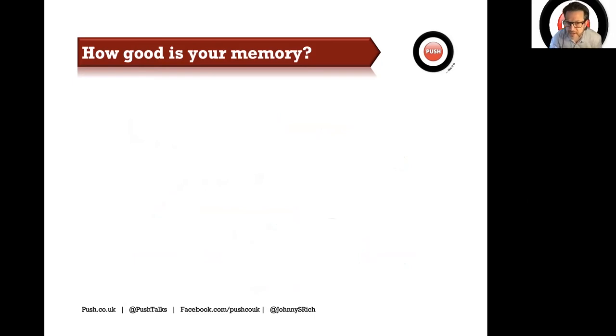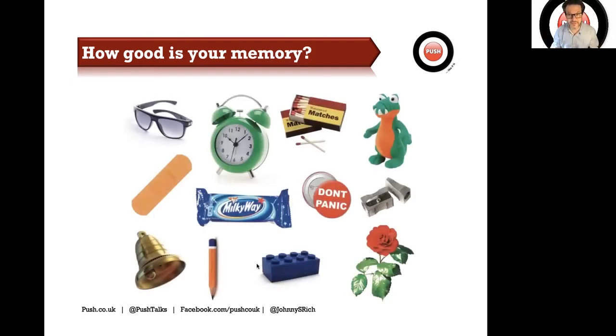Now the chances are that we can probably remember most of those items now, especially if we retell the story. So there was a girl called Rose. She was lying in bed and the alarm clock went off and she got out of bed and she trod on a Lego. She ran to the bathroom and got a plaster. The doorbell went off. There was a dragon wearing sunglasses who said, my fire has gone out. So she went to get a pencil to write that down. The pencil was blunt. So she needed a sharpener. She then went back to him and said, don't panic. And she used the matches to relight his fire. And he gave her a Milky Way. That was all of them. We remembered every single one.